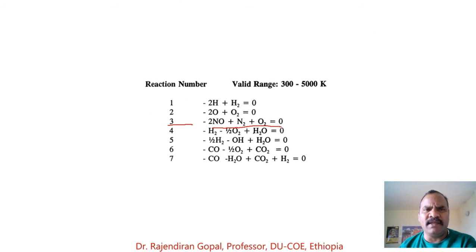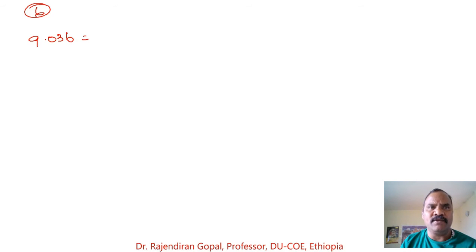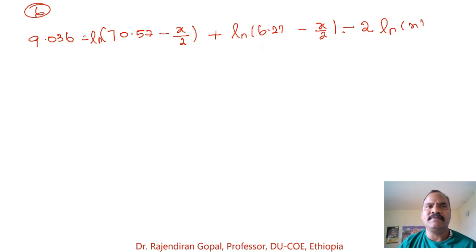For reaction N2 + O2 → 2NO, the value of ln Kp at 1800 K is −9.036 (from tables). Applying this into the equilibrium expression: −9.036 = ln(70.57 − X/2) + ln(6.27 − X/2) − 2 ln(X).